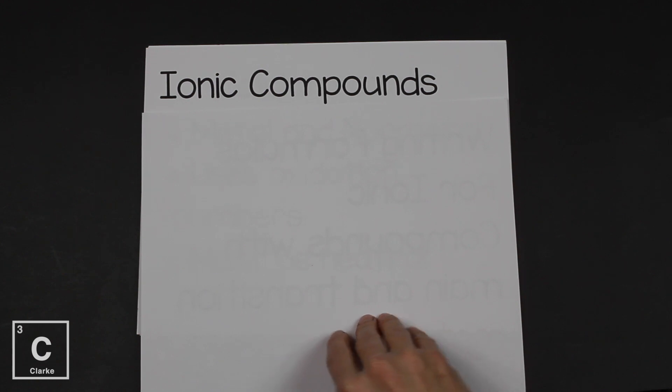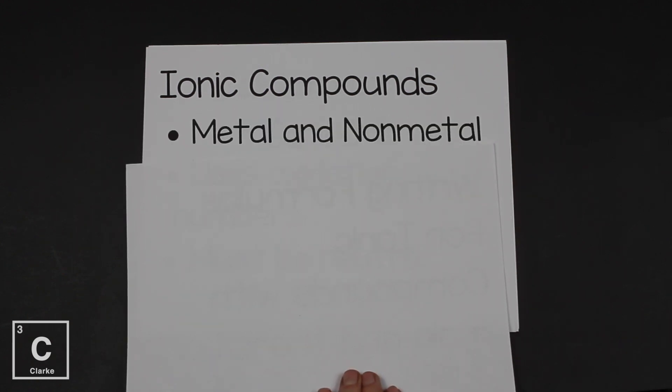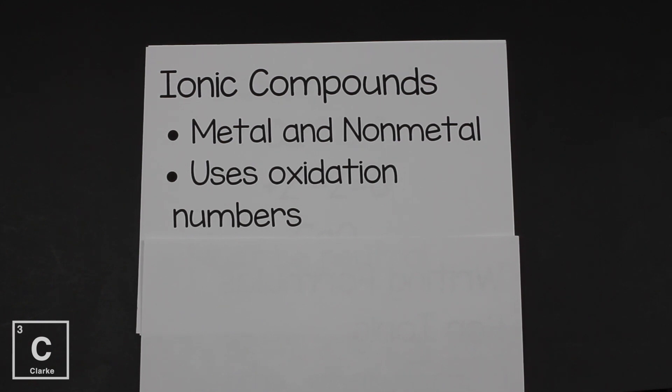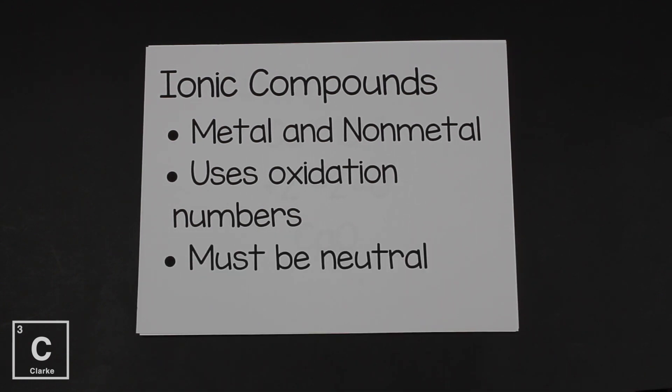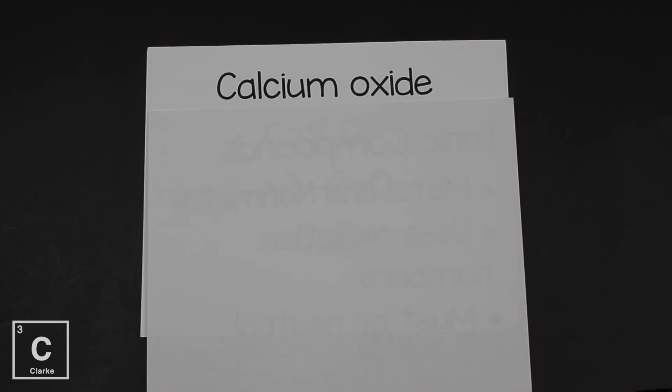Ionic compounds, those are compounds that are made out of metals and non-metals. We're also going to need to use oxidation numbers. Remember, those are the charges of the ions, and we can get those just from looking at the periodic table. Also, ionic compounds, they must be neutral.